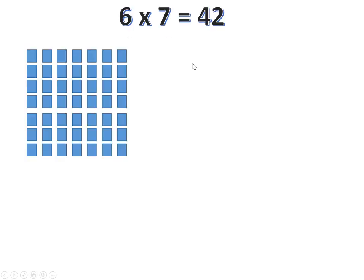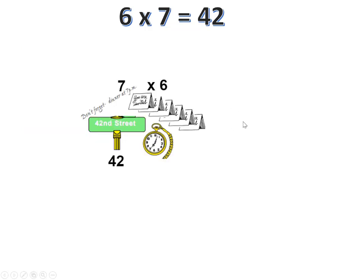Now six times seven equals 42. Well, maybe a story will help. Let's have dinner for six people at seven o'clock on 42nd Street. Seven times six is 42.